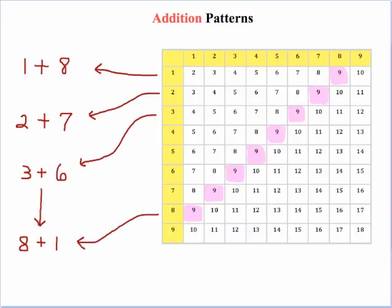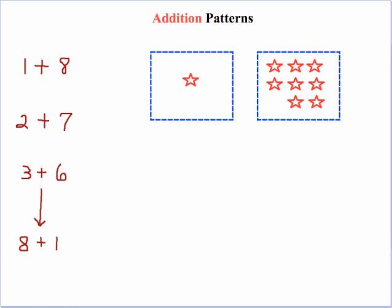If we look at the diagonal with the 9s, we have pretty much the same pattern. We start off with 1 plus 8, then 2 plus 7, and so forth. If we take 1 from this group and move it over, we've changed 1 plus 8 to 2 plus 7. We subtracted 1 from the right side group and added it to the left group, so our result is 2 plus 7 instead of 1 plus 8.